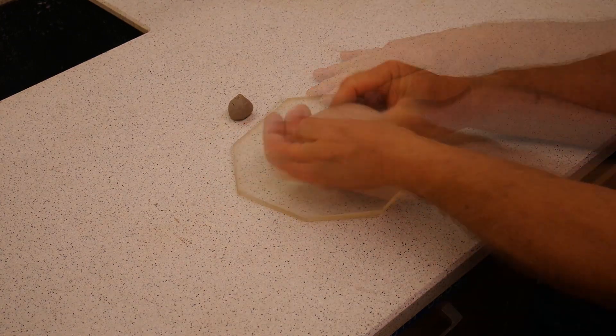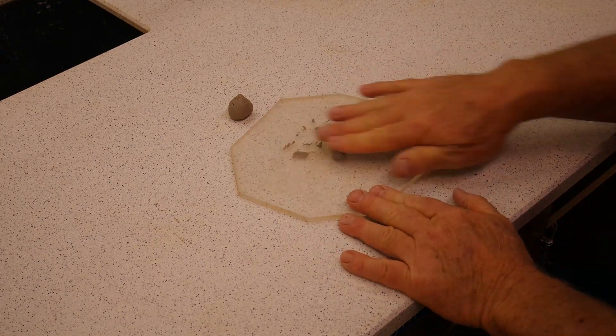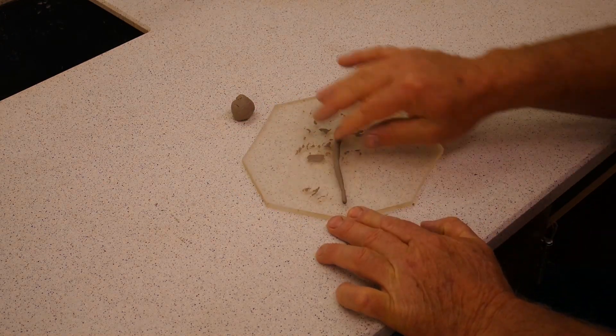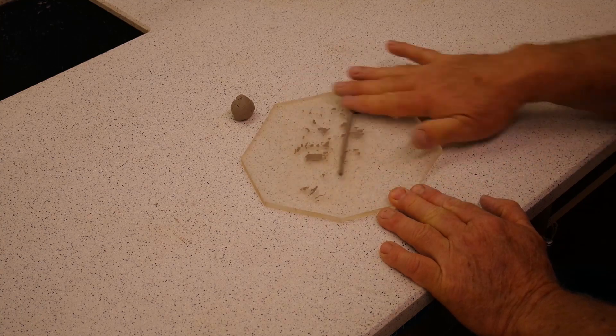Before the sample starts to break up, when we can no longer get a worm that is an eighth of an inch thick and at least one inch long, we have hit our plastic limit.